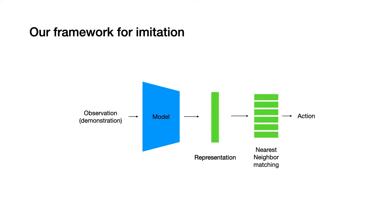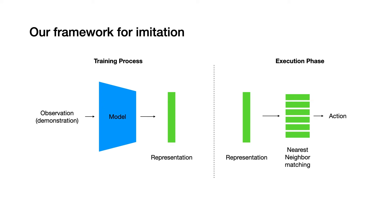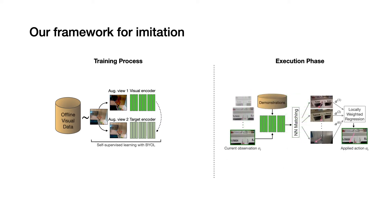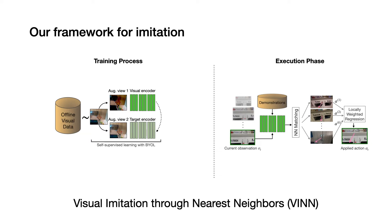We can split our model into two phases. In the training phase, we learn a visual representation from our training data. In this work, we use Bootstrap Your Own Latent, or BYOL, to do so. In the execution phase, we use nearest neighbor in the representation space to figure out our actions given any observations. We use locally weighted regression to find the current action given actions from the nearest neighbors of our observation. We call this method Visual Imitation through Nearest Neighbors, or VIN in short.